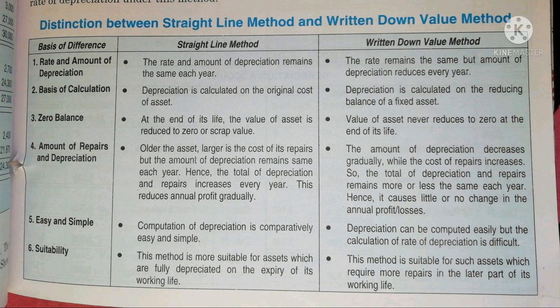Whereas under the Written Down Value Method, depreciation is calculated on the reducing balance of fixed assets — that is, the book value of the asset after charging depreciation. We calculate depreciation on the reducing balance of an asset. The third difference is zero balance.